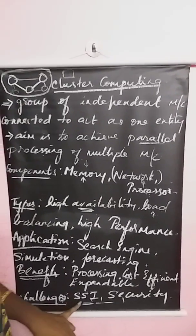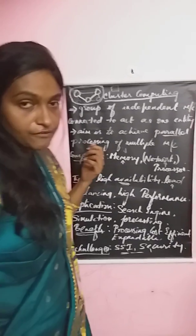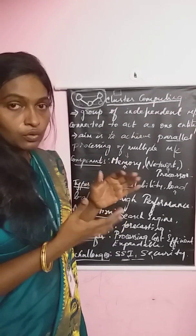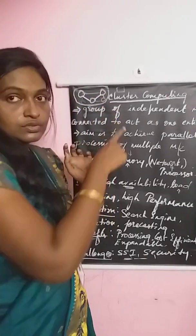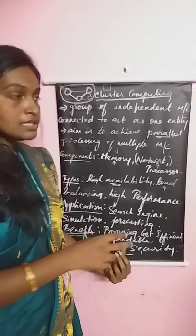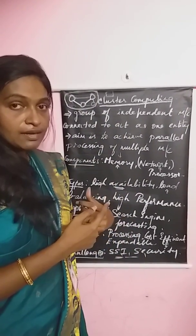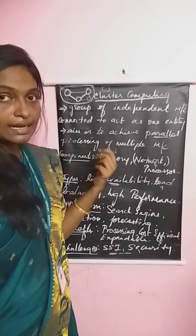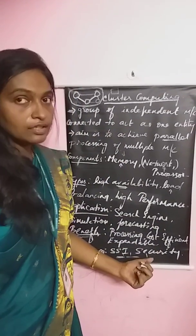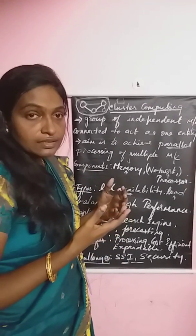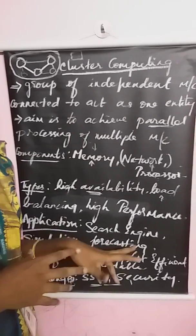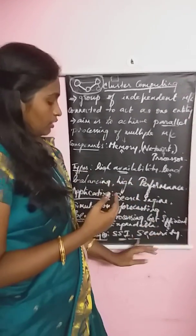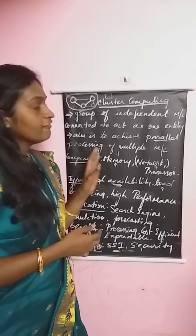A few challenges in cluster computing include SSI and security. SSI stands for Single System Image — since different independent machines have to work together as one single entity, there should be a single system image for all nodes. Though there may be any number of nodes or independent machines, the cluster should always look and act like a single system, but maintaining that single system image is not easy. Security is also a challenge since machines are located at different areas, making it an important problem to address for maintaining an efficient cluster.